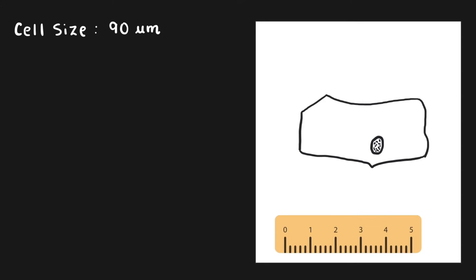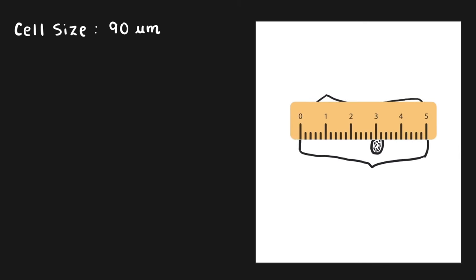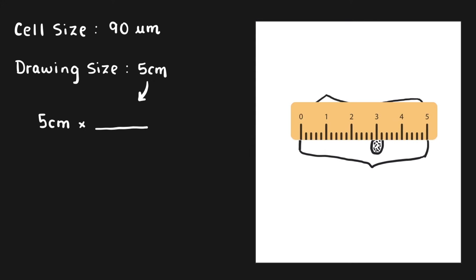For this, we need a ruler because we're going to actually measure our drawing. We're going to take our ruler and place it over our cell in the same dimension as what we measured the fit number. We see that our drawing is exactly five centimeters. Now we see these are different units, so we want to convert five centimeters into micrometers. We can do some unit conversion for that. Five centimeters, and in one centimeter there are 10,000 micrometers.